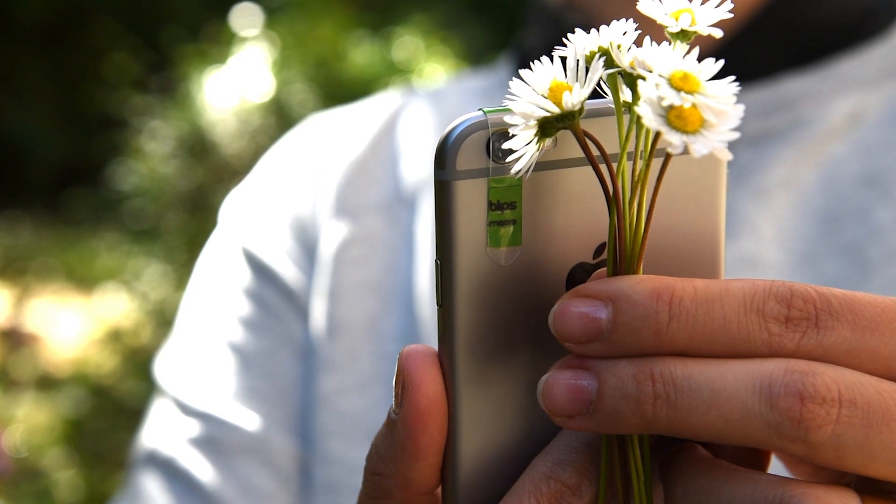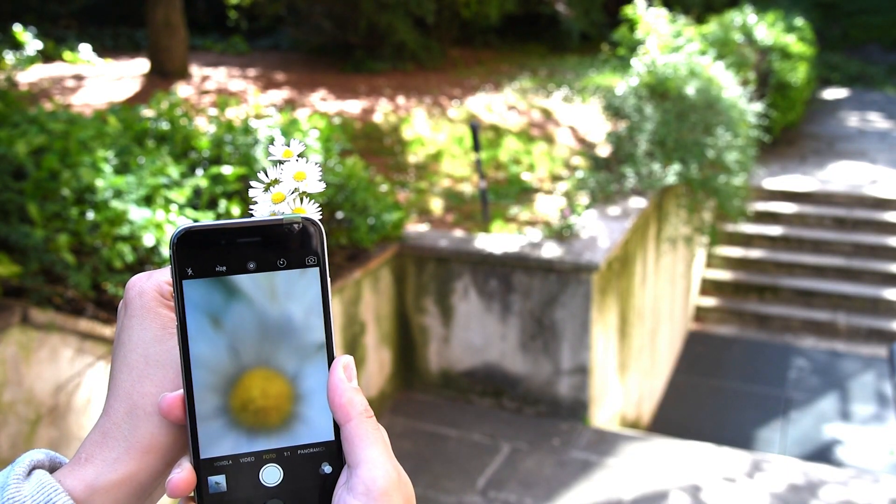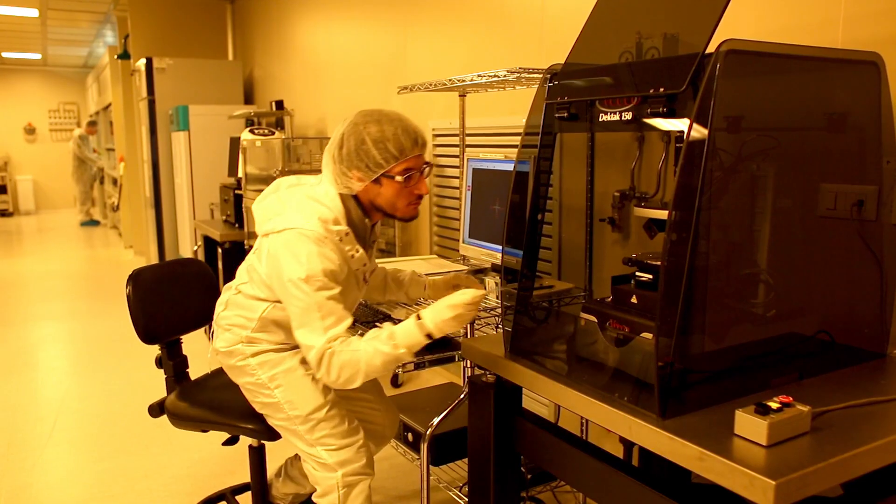When in use, a tiny objective lens electrostatically adheres to your smartphone camera, enhancing its optical power and allowing a perfect distinction of microscopic details.